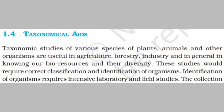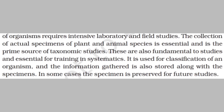The last topic of this chapter is taxonomical aids. Taxonomic studies of various species of plants, animals, and other organisms are very useful in agriculture, forestry, industry, and in knowing our bio-resources and their diversity. These studies require correct classification and identification of organisms, which requires intensive laboratory and field studies. The collection of actual specimens of plant and animal species is essential and is the prime source of taxonomic study.